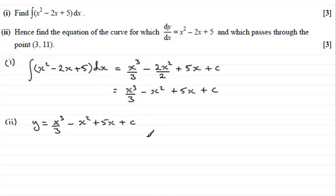So what we've got then is that y equals x cubed over 3 minus x squared plus 5x plus c. And we've just got to work out that constant c. And to do that, we know that when x equals 3, y will equal 11, since this point lies on our curve. It must satisfy the equation.